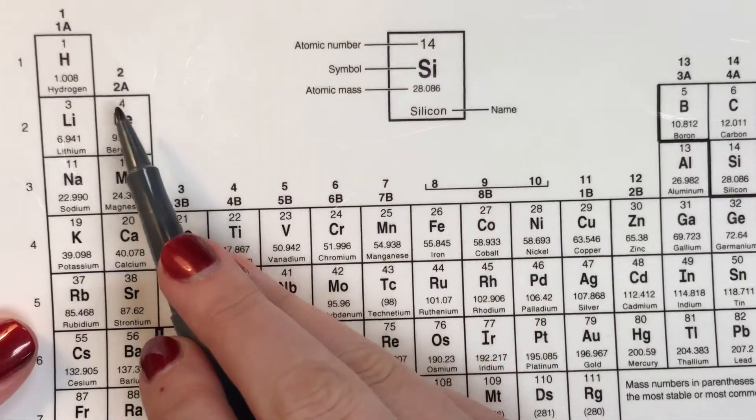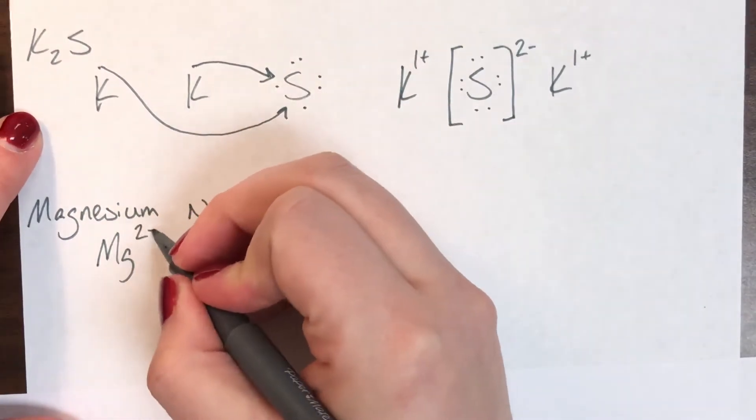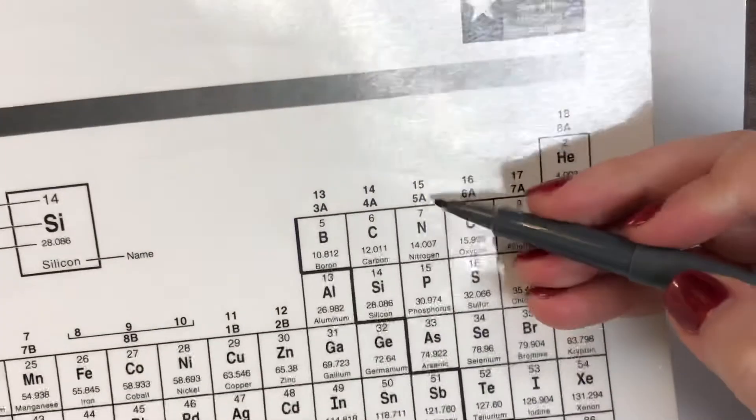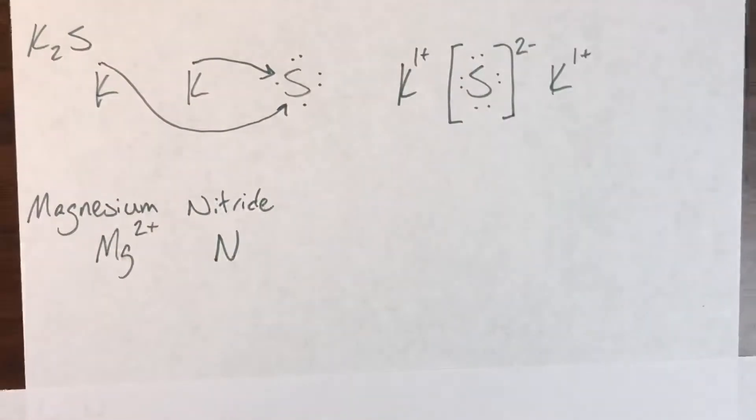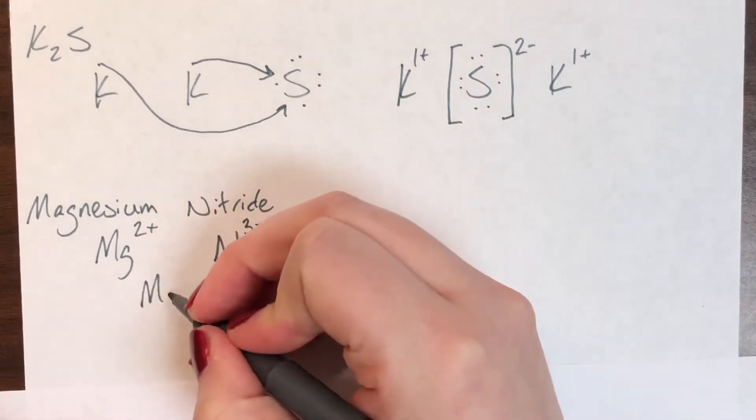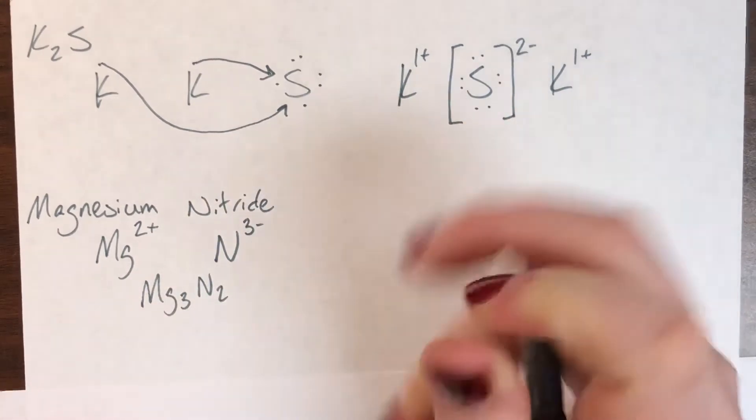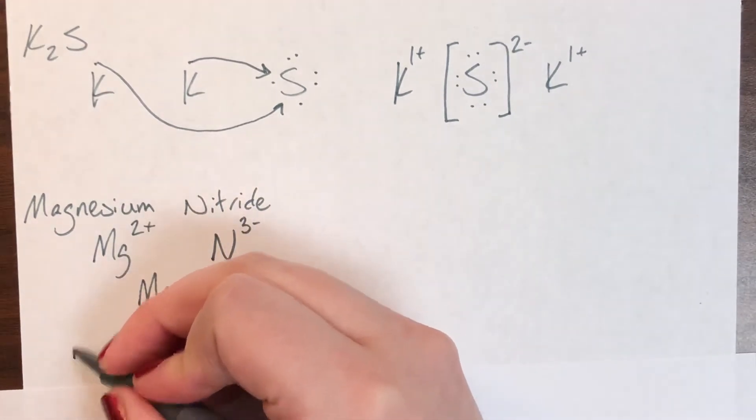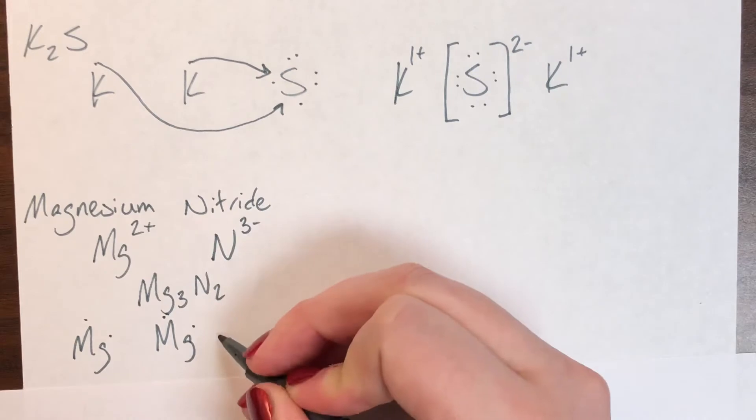So magnesium is in column 2A so that means it has two valence electrons so it will donate those two valence electrons so the magnesium ion would be Mg2+. Then we have nitrogen who is in column 5A which means it has five valence electrons so it has five, it wants eight, so it is going to steal three. And then whenever I crisscross charges for subscripts I see that I need three magnesiums and two nitrogens which would end up making me have to draw three magnesiums so I'll go ahead and do that. Can't see that dot so I'll redraw it.